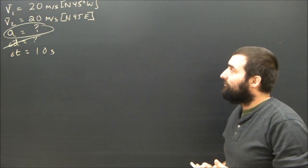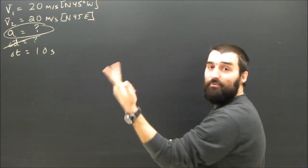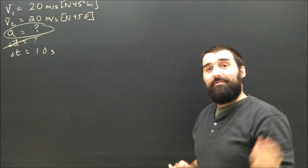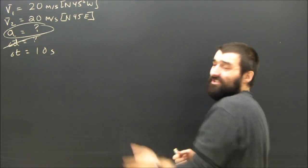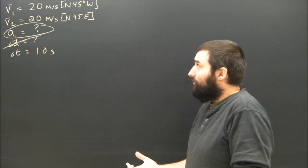The important thing to realize here, of course, we've got V1, V2, A, D, and T. Those are the variables that are in the big five equations. This is just a big five problem.